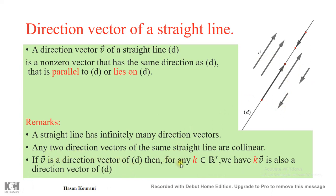A straight line has infinitely many direction vectors, and any two direction vectors of the same line are collinear. Importantly, if v is a direction vector of D, then for any k belonging to ℝ* (the set of all non-zero real numbers), the vector kv is also a direction vector of D, since v and kv are collinear.